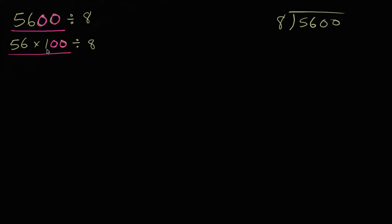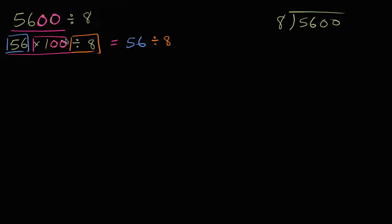When you write it this way, you might say: instead of doing 56 times 100 divided by 8, I can switch the order. This is going to be the same thing as 56 divided by 8, times 100. It's pretty straightforward if you remember your multiplication tables what 56 divided by 8 is.